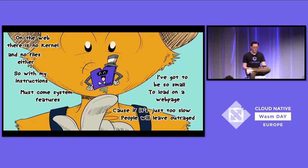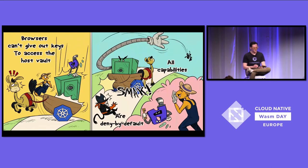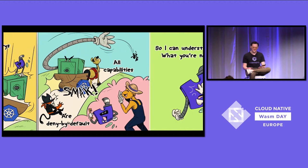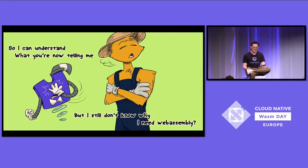On the web, there's no kernel and no files either. So with my instructions must come system features. I've got to be so small to load on a web page, because if it's just too slow, people will leave outraged. Browsers can't give out keys to access the host vault. All capabilities are denied by default. So I can understand what you're now telling me, but I still don't know why I need WebAssembly.